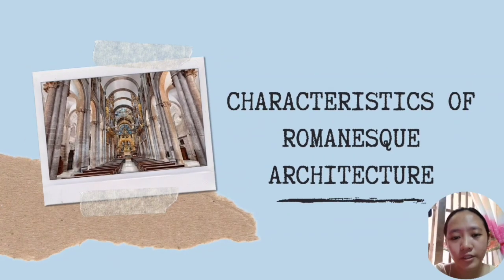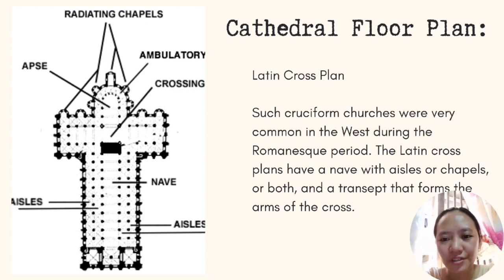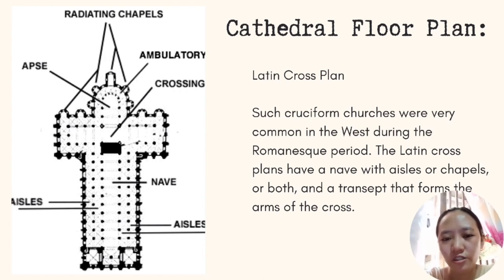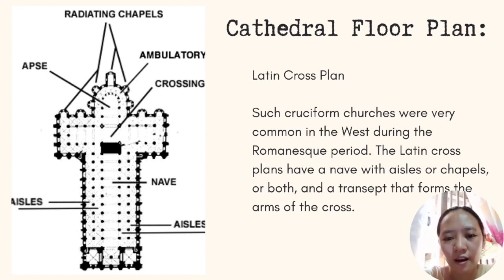The characteristics of Romanesque architecture: the first is the cathedral floor plan. In this period, they usually used the Latin cross plan in churches and cathedrals. Such cruciform churches were very common in the west during the Romanesque period. The Latin cross plan has a nave with aisles or chapels, and a transept that forms the arm of the cross.